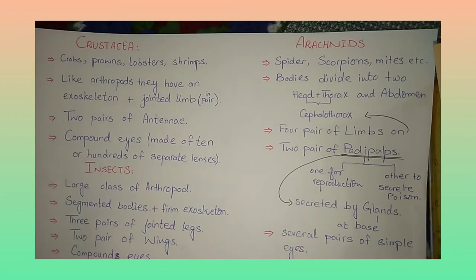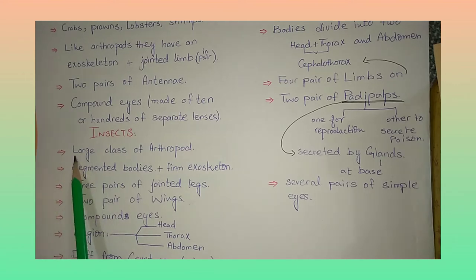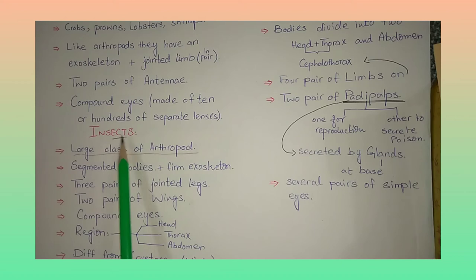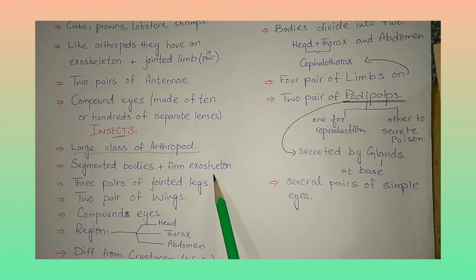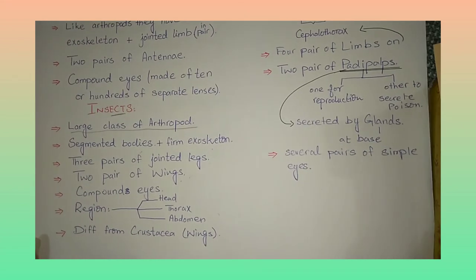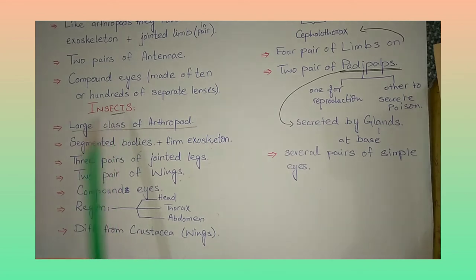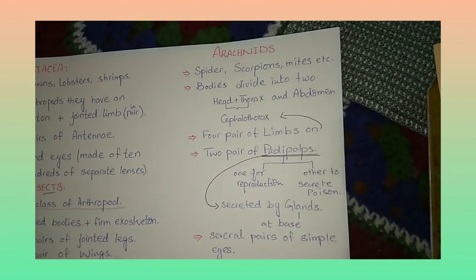Now, insects: insect is the largest class of arthropods — an important point for multiple choice questions. Insects also possess segmented bodies, a firm exoskeleton (the cuticle), three pairs of jointed legs, two pairs of wings, compound eyes, and the same three body regions as arthropods: head, thorax, and abdomen. One key difference from crustaceans is that insects have two pairs of wings while crustaceans do not.